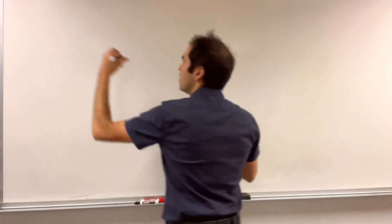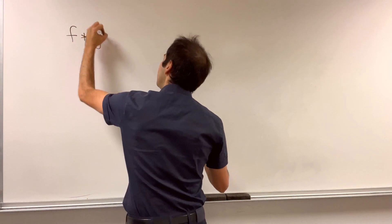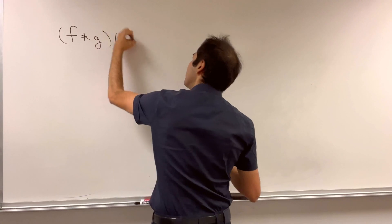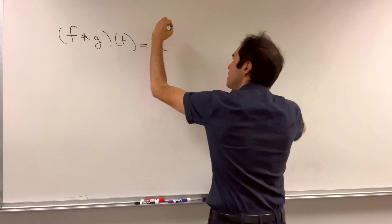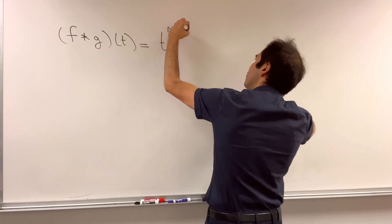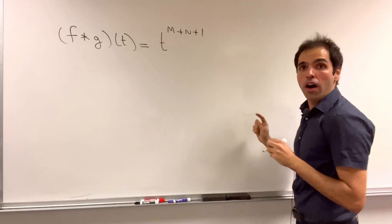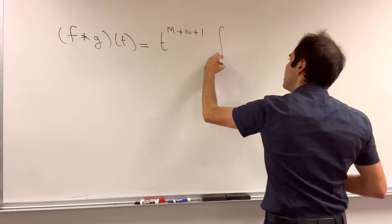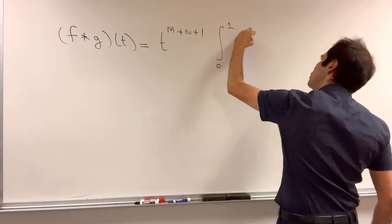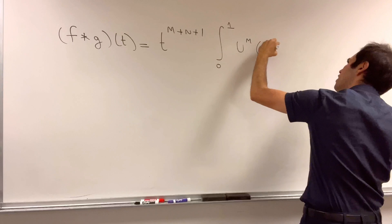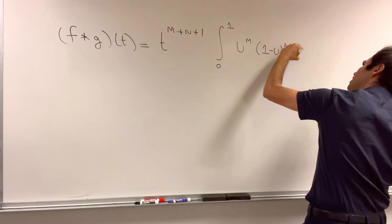so f convolved with g of t, then becomes t to the m from the first factor, n from the second factor, 1 from that du, integral from 0 to 1, of u to the m, 1 minus u to the n, du.